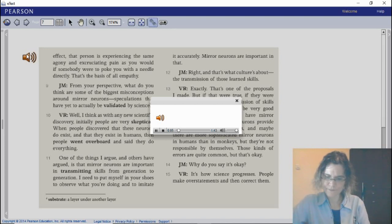From your perspective, what do you think are some of the biggest misconceptions around mirror neurons, speculations that have yet to actually be validated by science? Well, I think, as with any new scientific discovery, initially people are very skeptical. When people discovered that these neurons do exist and that they exist in humans, then people went overboard and said they do everything.